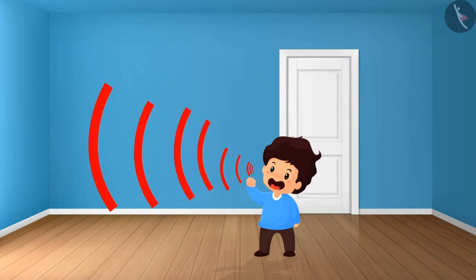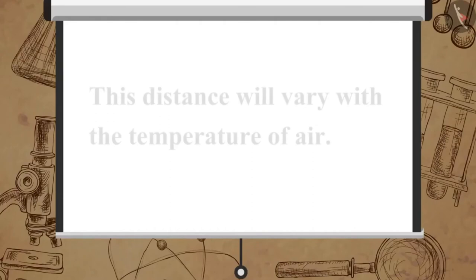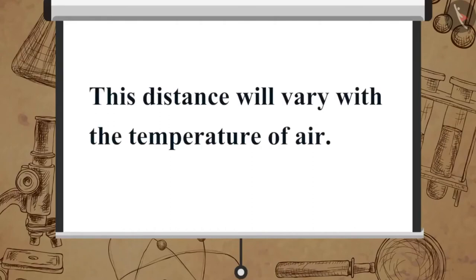So to receive a distinct echo, the minimum distance between the source of sound and the reflecting surface should be at least half of this distance, that is 17.2 meters. This distance will vary with the temperature of air.